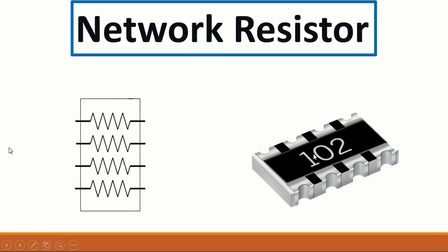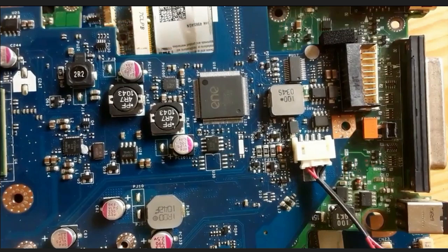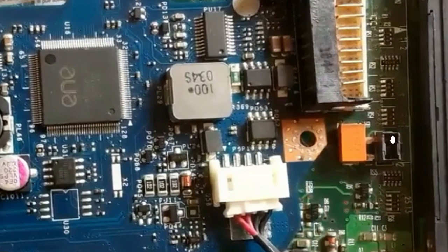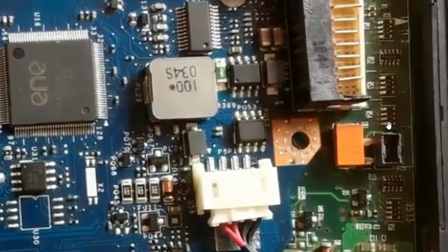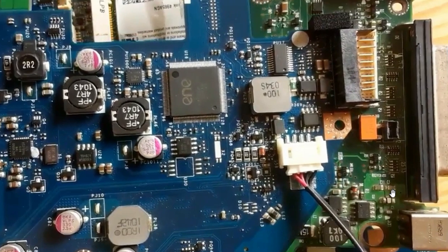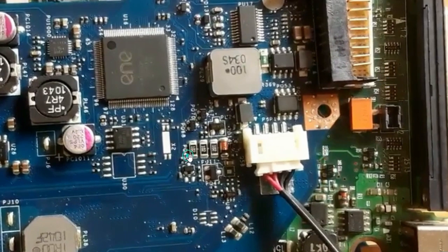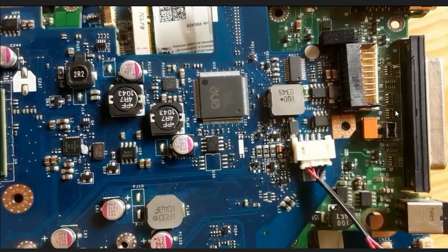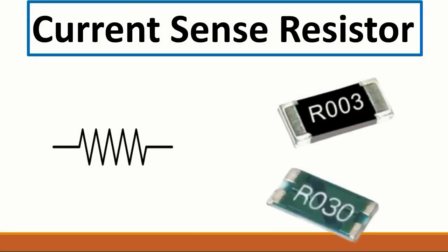Let's see the motherboard for network resistors. As you can see here, we have network resistors — this one is a combination of four resistors, and this one has four or five resistors. The purpose of these resistors is to minimize the space used on the motherboard.